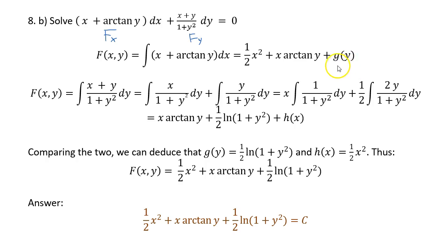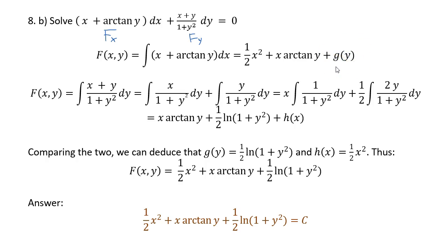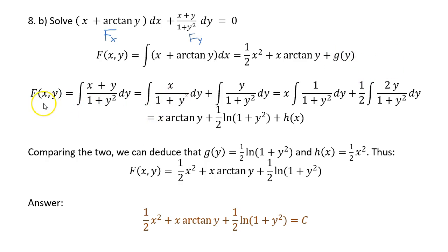Instead of the usual +c, we write +g(y), because in partial integration any function of y acts as a constant. That function of y would be deleted when differentiating by x, which is exactly why we need this extra term. Similarly, to handle the other partial derivative, we integrate f_y with respect to y to recover f — that's how we find the unknown g(y).